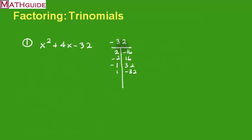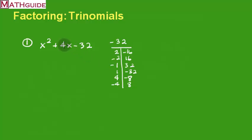Let's try 4 and negative 8, or negative 4 and positive 8. When I add 4 and negative 8, I get negative 4 — that's the right number but just the wrong sign. When I add negative 4 and positive 8, I get positive 4. There's the winner — those two add up to positive 4.